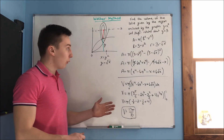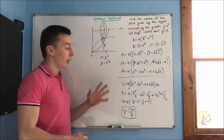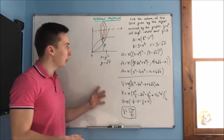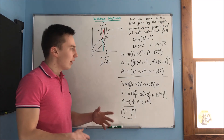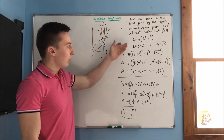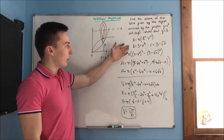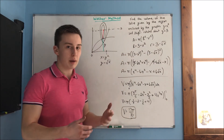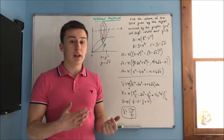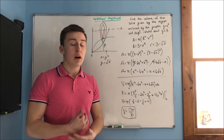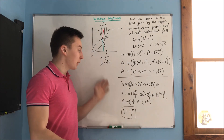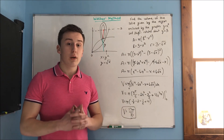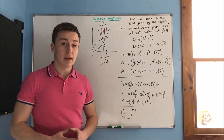That does it for this video. I'll do a more challenging problem video. This is pretty easy but I just want to get you guys to understand. The hardest part of this problem is just finding your radii — you find your radii and then it just becomes all calc 1 from there. So that does it for this video and I'll see you guys in the next one.